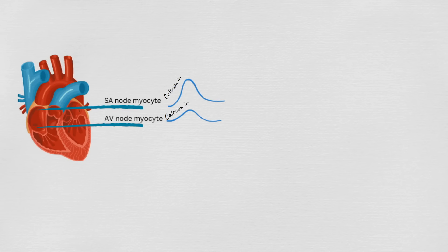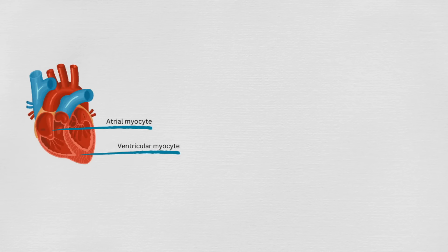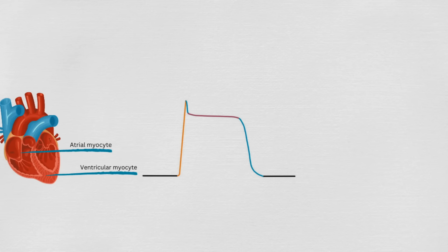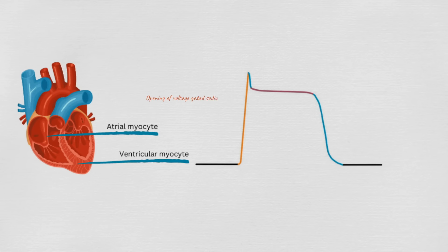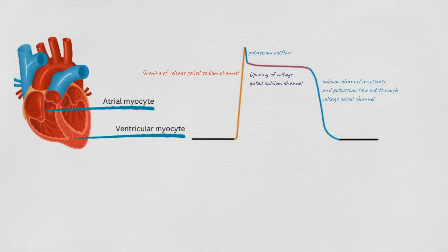For the SA/AV node myocytes, calcium will go in, then potassium will go out. Now for the atrial and ventricle myocytes' action potential, it will start with the opening of voltage-gated sodium channels, so sodium will go in. Then there will be an outward flow of potassium, but it will be balanced by the opening of voltage-gated calcium channels. After that, the calcium channels will inactivate, then the potassium will continue to flow out through the voltage-gated ion channel.